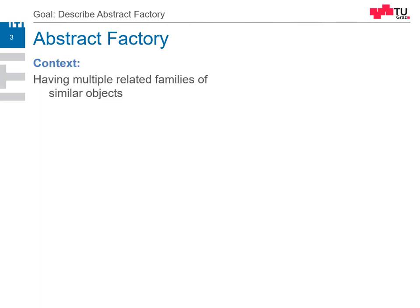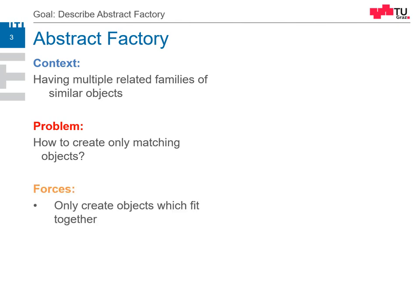So what is the context? First of all, we have different related families of similar objects. If you only have one object family, it doesn't make sense to use the Abstract Factory. The problem is: how can we create matching objects — objects which belong together and are compatible with each other? The forces are: families are compatible inside, but not outside, and we want to create a system which fits together.